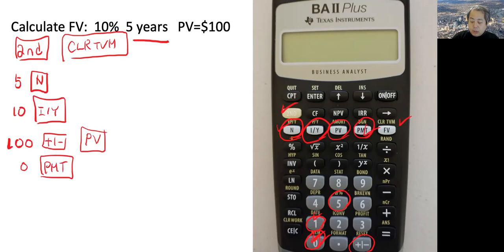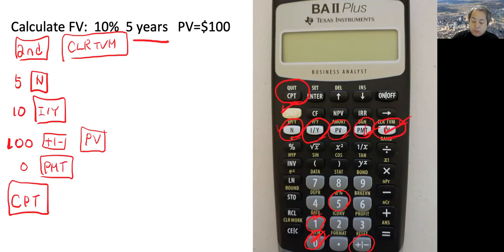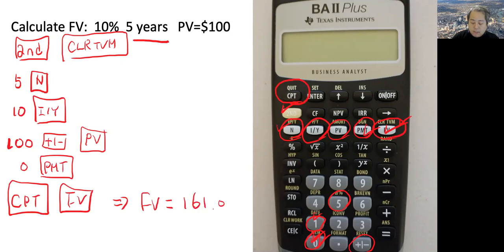To get the future value, press CPT (compute) first, then press FV. You should see future value equals $161.05 — exactly the same number as our manual calculation. That is how to use the financial calculator.